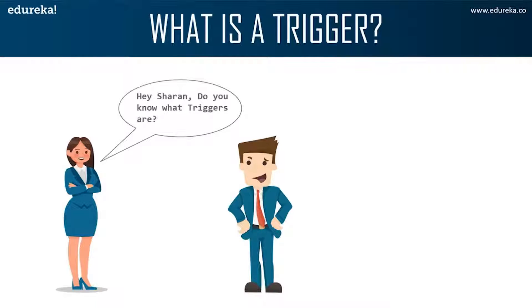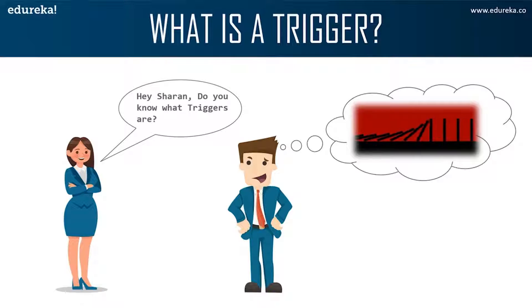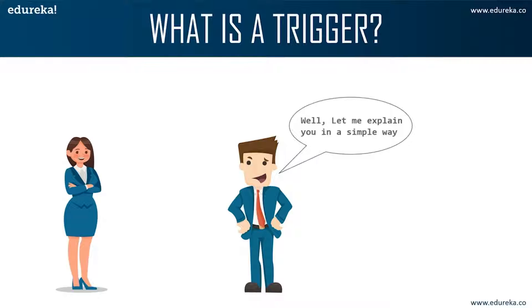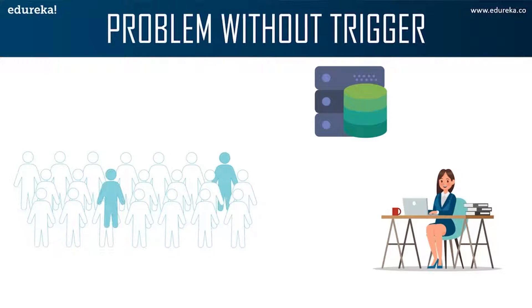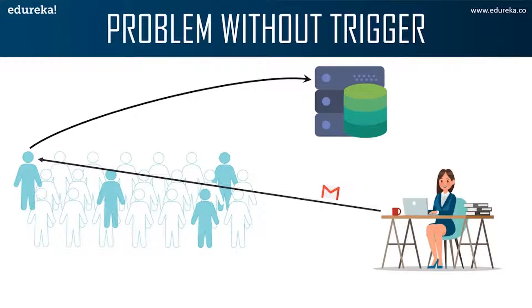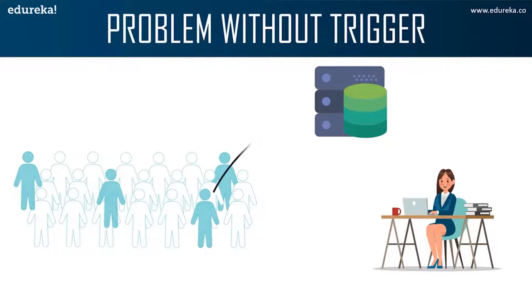Here we can see Anna is asking Sharon about triggers. Sharon imagines a trigger like falling dominoes. Anna is a marketing officer in a company. When new customer data is entered into the company's database, she has to send a welcome email to each and every new customer. If it is one or two customers Anna can do it manually, but what if the count is more than a thousand?